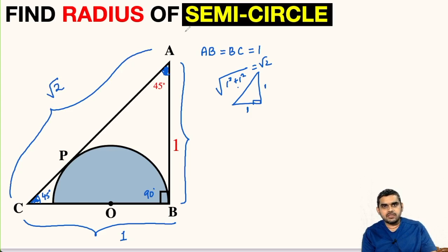Now our main aim is to find the radius of this semicircle. In order to do so, let us first join these two points. Now OP will be perpendicular to AC.